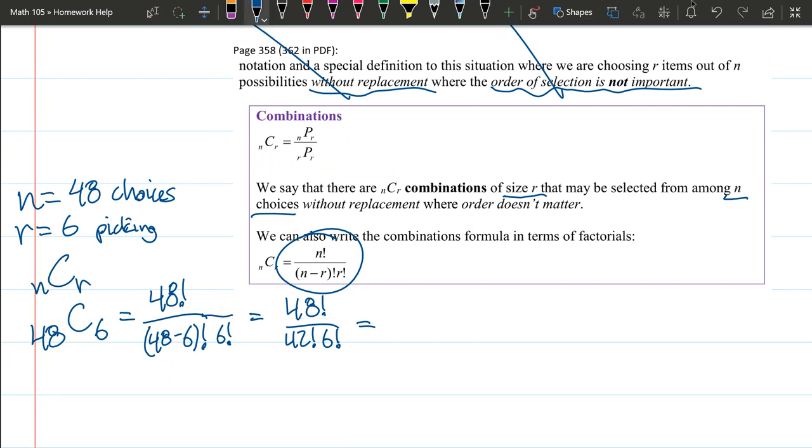Factorial means you're multiplying 48 times 47 times 46 times 45 times 44 times 43 times 42. So 48 factorial is 48 times 47, 46, 45, 44, 43, 42, and I'm stopping here at 42 and putting a factorial at the end of this. Because 42 factorial means times 42 times 41 times 40 times 39, et cetera. I can now cancel this 42 factorial with that 42 factorial on the bottom. You still have to type in this big product up here.